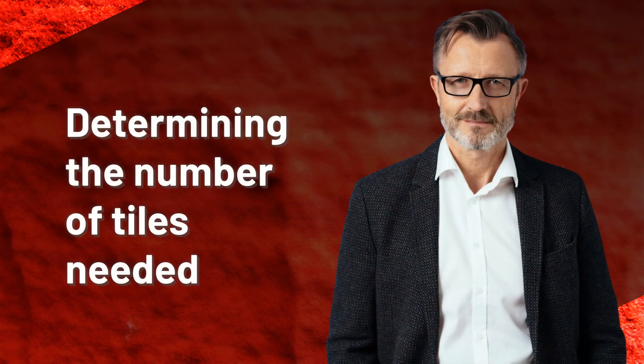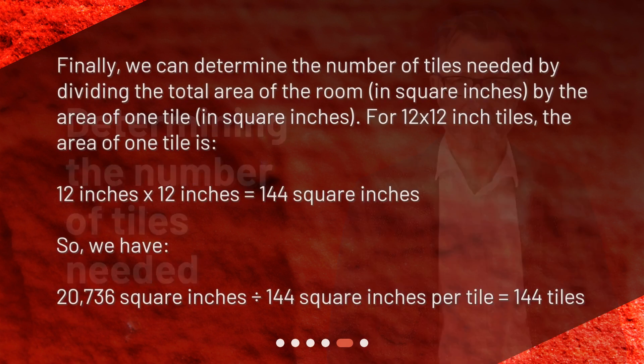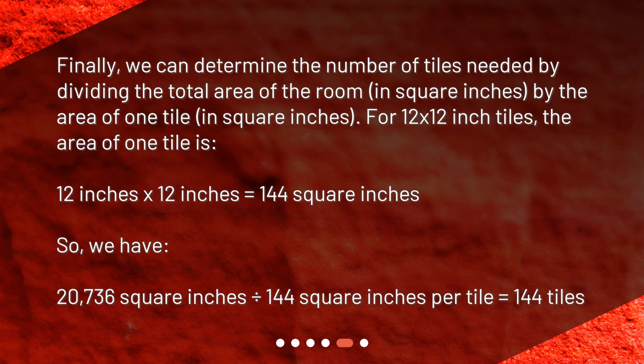Determining the number of tiles needed. Finally, we can determine the number of tiles needed by dividing the total area of the room in square inches by the area of one tile in square inches. For 12 by 12 inch tiles, the area of one tile is 12 inches by 12 inches equals 144 square inches. So, 20,736 square inches divided by 144 square inches per tile equals 144 tiles.